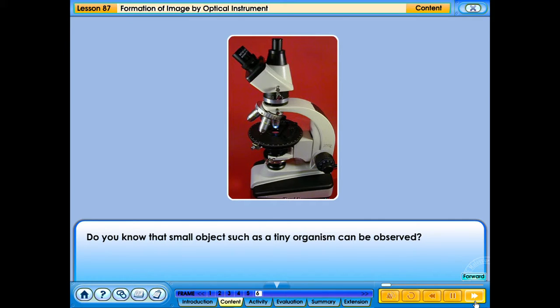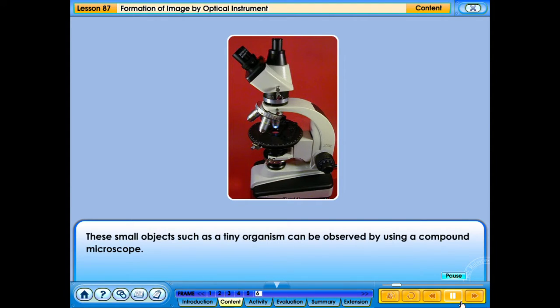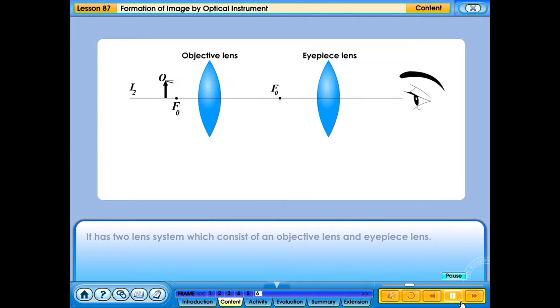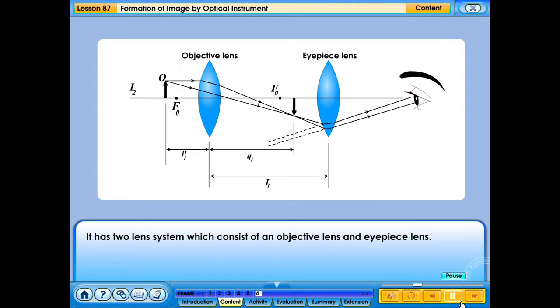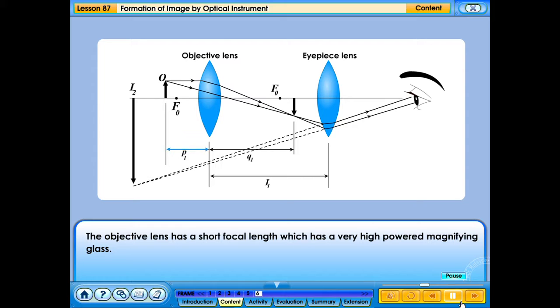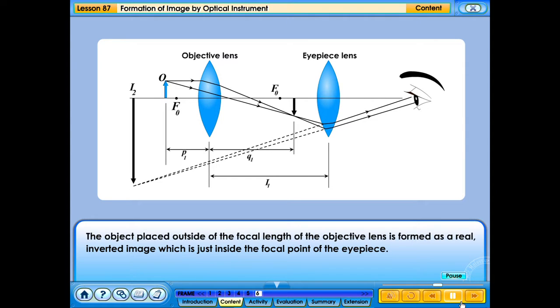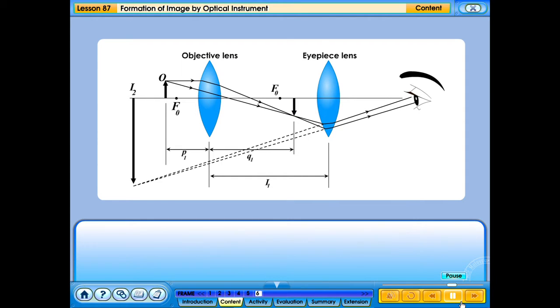Do you know that small objects such as tiny organisms can be observed? These small objects can be observed by using a compound microscope. It has a two-lens system which consists of an objective lens and an eyepiece lens. The objective lens has a short focal length which has a very high-powered magnifying glass. The object placed outside the focal length of the objective lens is formed as a real, inverted image which is just inside the focal point of the eyepiece. The eyepiece which serves as simple magnifier uses the image as its object and produces an image. The images formed in the microscope are always virtual, inverted and very much enlarged.